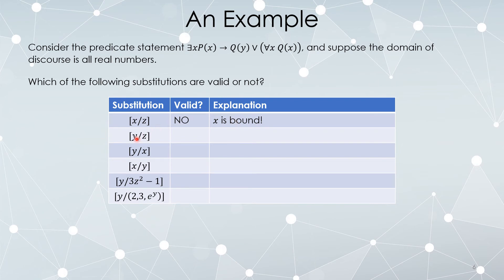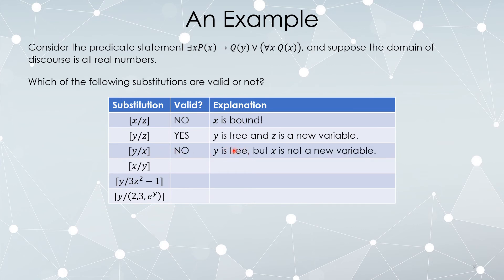Can I replace every instance of y with z? Yes — y is a free variable and z is totally new, it doesn't show up anywhere. Can I replace every instance of y with x? No — y is a free variable, that's not the problem, but x is not new. X appears in the statement, and even though it's a bound variable, it's still off limits for substitution.